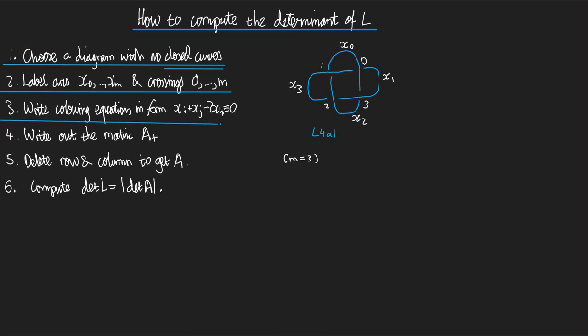Write the colouring equations in the form Xi plus Xj minus 2Xk congruent to 0. So let's do that over here. And let's name the colouring equations this time.